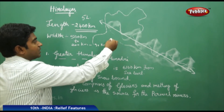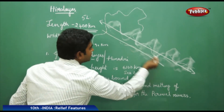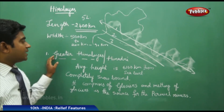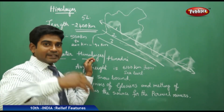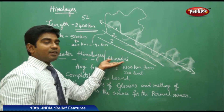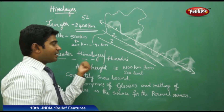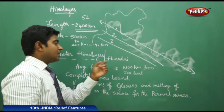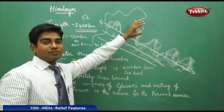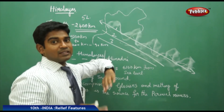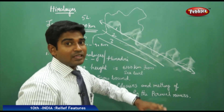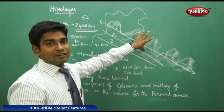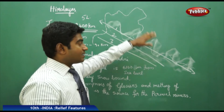Coming to the Himalayan divisions, the Himalayas are divided into three parts. The first part is known as the Greater Himalayas, or in technical terms, Himadri. The average height of the Himadri range is 6,100 meters above sea level.